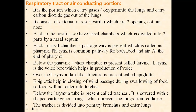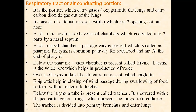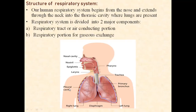Now, below the larynx you will find a tube-like structure called the trachea. The trachea is otherwise called the windpipe. The trachea is covered with C-shaped cartilaginous rings which prevent the trachea from collapse. See, this is the C-shaped cartilaginous ring — it is C-shaped, meaning half-moon-like, and they are made up of cartilage.